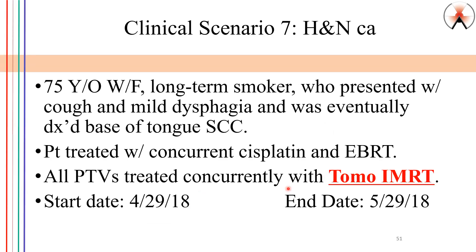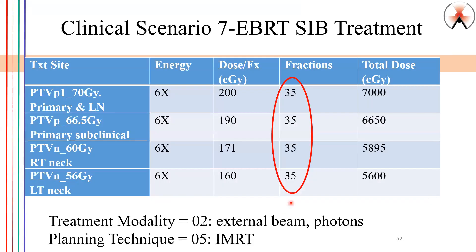Head and neck case — patient was treated concurrently with TOMO IMRT. So we have IMRT, but we also have TOMO, and that can be confusing if we're not familiar with the terms. SIB — simultaneous integrated boost — you're more likely to see this with head and neck cancer cases, but you can also see these in prostate cases as well. Typically we refer to them as PTVs: PTV total dose 70, PTV 66.5, PTV 60, and PTV 56. In this case, there are four distinctive volumes that were irradiated — four volumes, that's four phases. Energy: as soon as we see X, it is photon, 02.